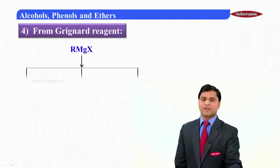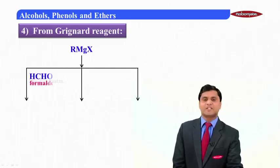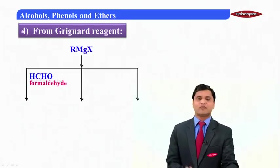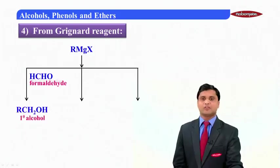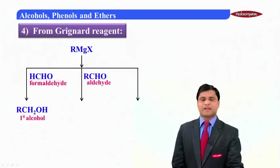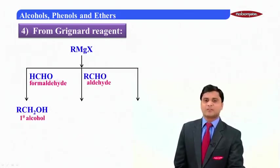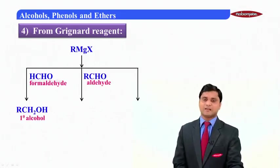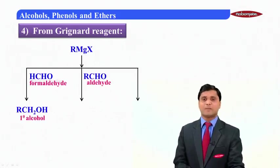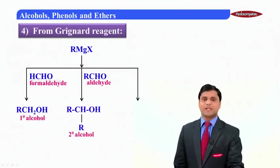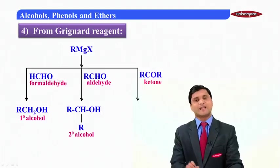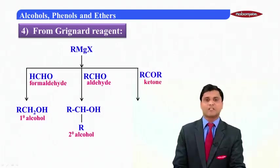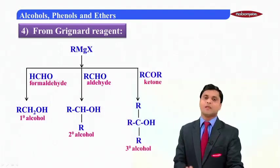The fourth method is from Grignard reagents. RMgX, alkyl magnesium halide, is commonly called a Grignard reagent. When a Grignard reagent reacts with formaldehyde, it always gives a primary alcohol. When a Grignard reagent reacts with any other aldehyde (other than formaldehyde), it gives a secondary alcohol. When a Grignard reagent reacts with a ketone, it always gives a tertiary alcohol.